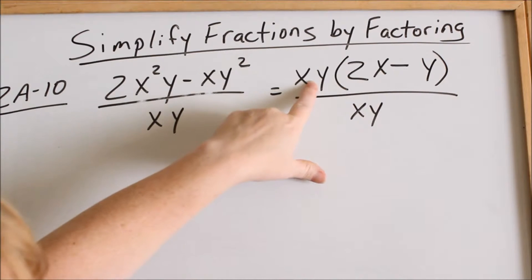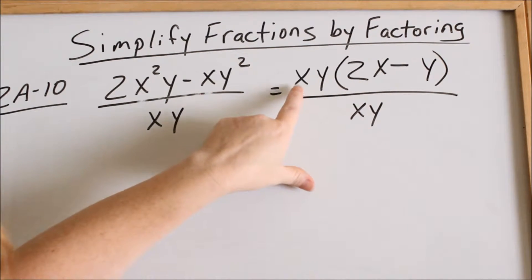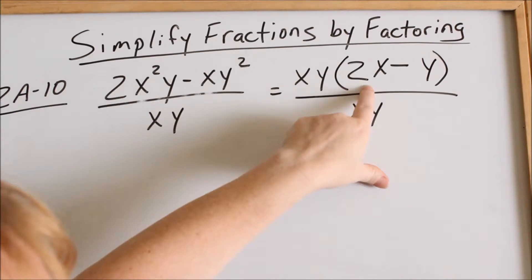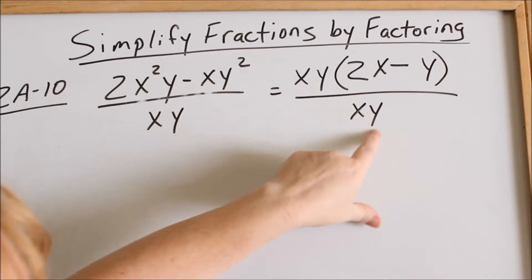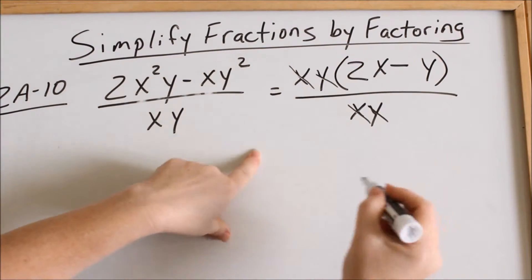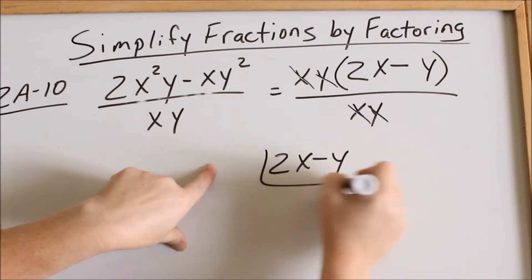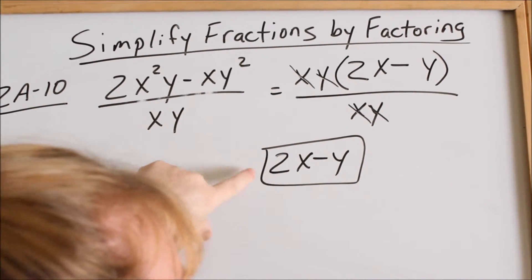Now, this xy is being multiplied to this parenthesis. Now I can cancel because this means x times y times this parentheses. This is x times y. Now my x's will cancel. Now my y's will cancel. And so the only thing that I have left is 2x minus y. That's simplifying by factoring.